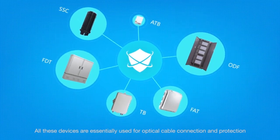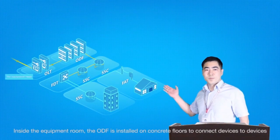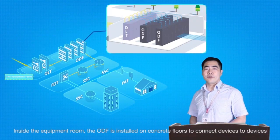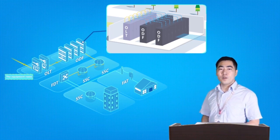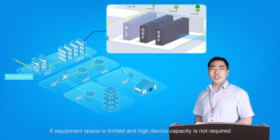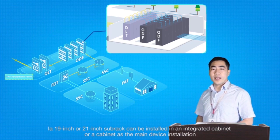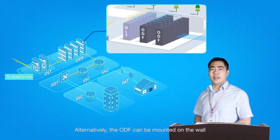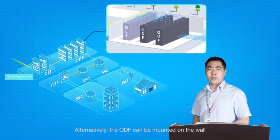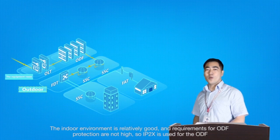All these devices are essentially used for optical cable connection and protection. Inside the equipment room, the ODF is installed on concrete floors to connect devices to devices, or to connect devices to optical cables. If equipment space is limited and high device capacity is not required, a 19-inch or 21-inch sub-rack can be installed in an integrated cabinet. Alternatively, the ODF can be mounted on the wall. The indoor environment is relatively good and requirements for ODF protection are not high, so IP2X is used for the ODF.